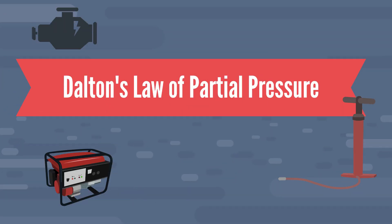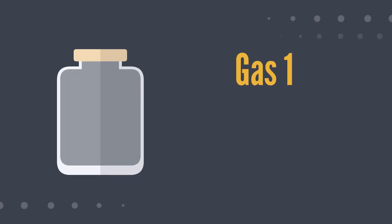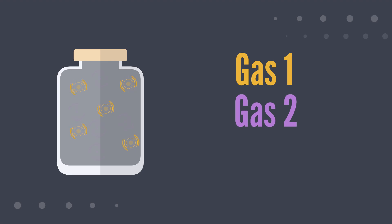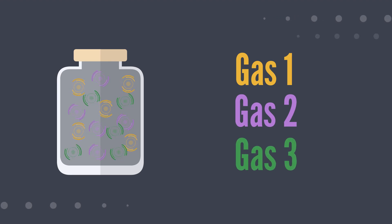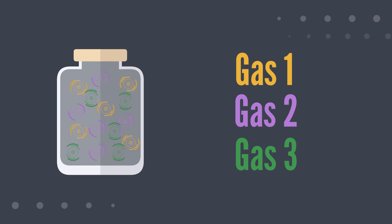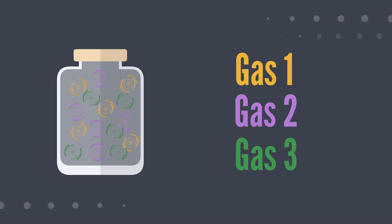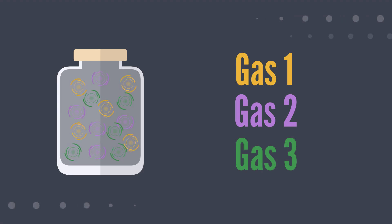Dalton's law of partial pressure will be easily explained in this video with animation. Let's say we have a container with three different gases: Gas 1, Gas 2, and Gas 3. Note that the gases are all inside the same container, which means that they all have the same volume.